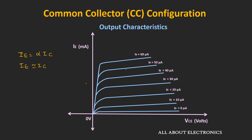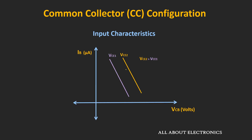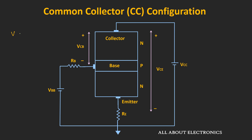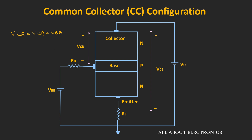The input characteristics shows the relationship between the base current Ib and the voltage Vcb. For a fixed value of voltage Vce, as we increase the voltage Vcb, the base current Ib reduces. This is because Vce equals Vcb plus Vbe. For a fixed Vbe, as Vcb increases, the width of the depletion region increases, the effective base width reduces, and the probability of recombination in the base region reduces. As a result, the base current Ib reduces.